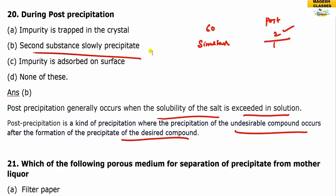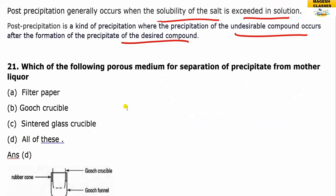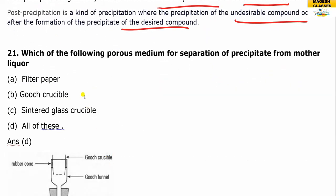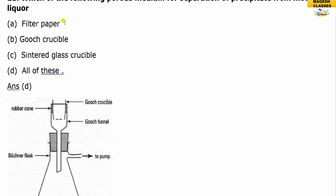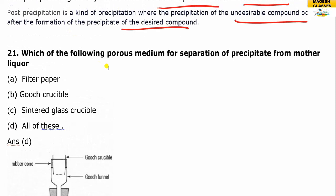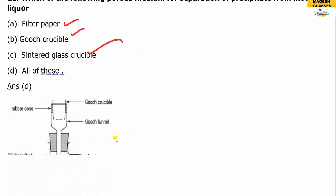In co-precipitation, two substances precipitate simultaneously. In post-precipitation, a second substance precipitates slowly after the first. Question 21 concerns filter media: in the forest medium, the precipitate is separated using filter paper, a Gooch crucible, or a sintered glass crucible used in the practical laboratory.